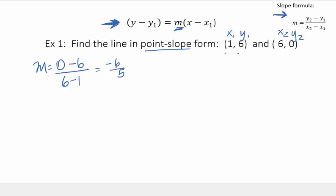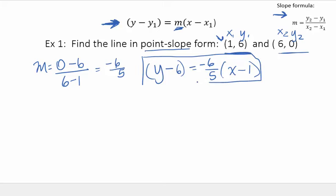Now for x1 and y1, I can use this point or I can use this point. So there's two possible solutions for this problem. Let's do this one first. So as I take this equation, I say y minus the y-coordinate, which is 6, equals negative 6 fifths x minus the x-coordinate, which is 1. So here's one answer for this problem. That is that line in point-slope form.